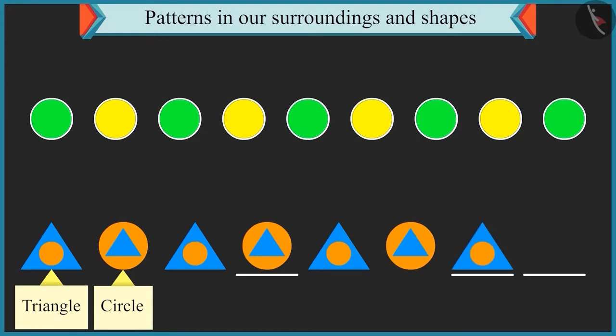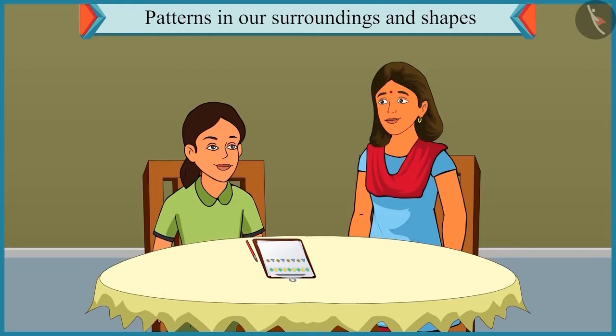A shape with a small circle inside a triangle would come next. What will come after that? A shape with a small triangle inside a circle would follow this. Absolutely right. Well done.